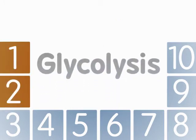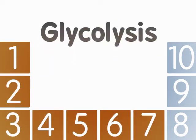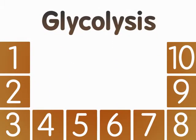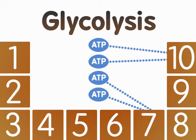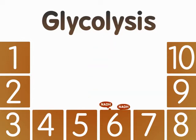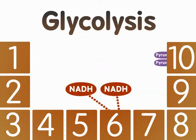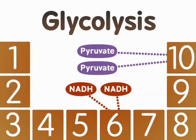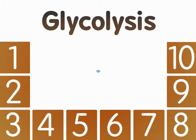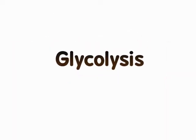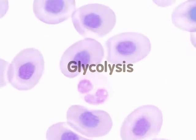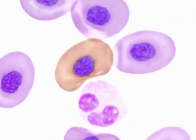Glycolysis is an important pathway for cells because it produces ATP and other products such as NADH and pyruvate that can be used later to produce more ATP for a cell. This key process takes place in the cytosol of the cell.